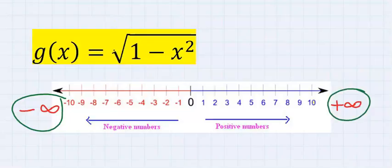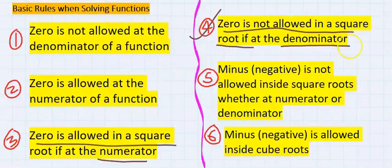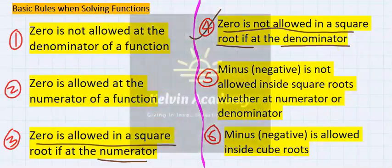This simply means that one is the maximum number accepted for x, because square root can accept zero.